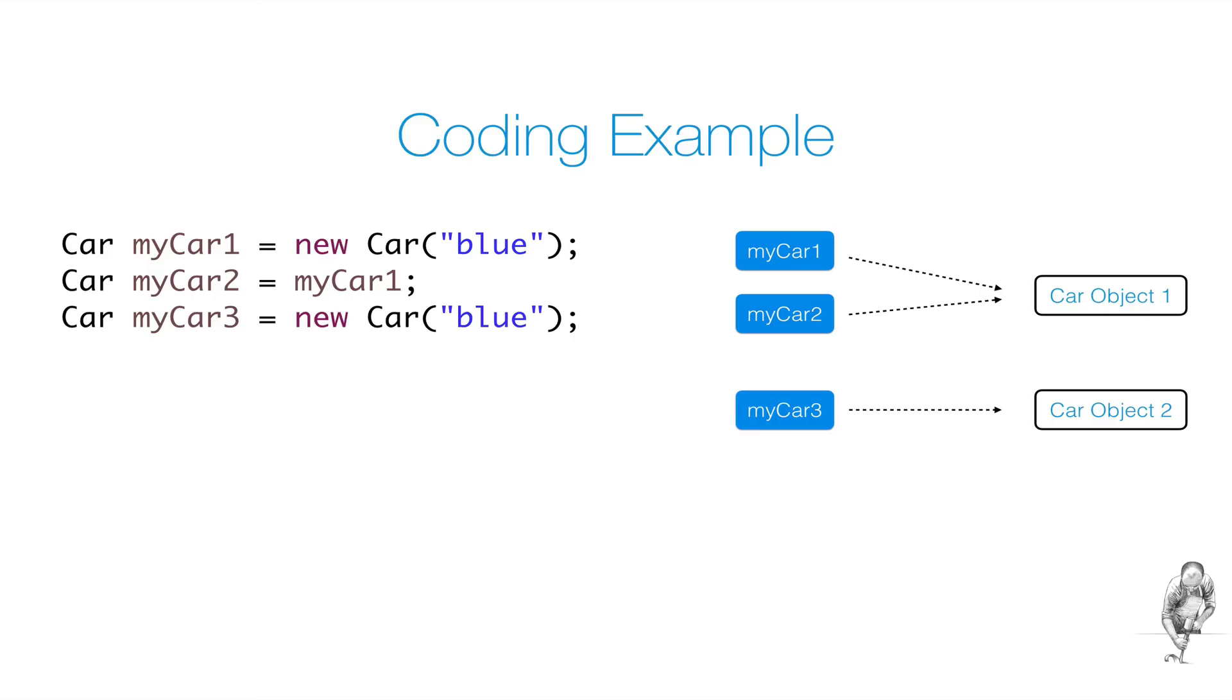Now what will happen if you compare the three reference variables with the equals operator? What will myCar1 equals operator myCar1 return? Pause the video and think about it before you continue. Comparing a reference variable with itself will of course return true.